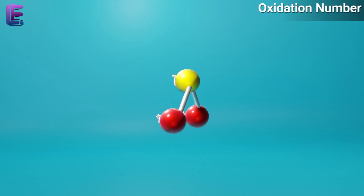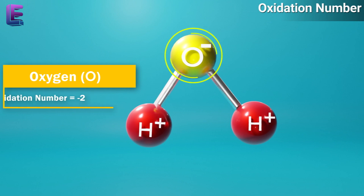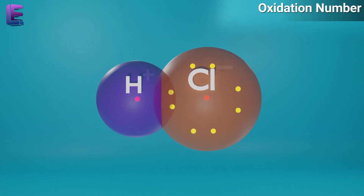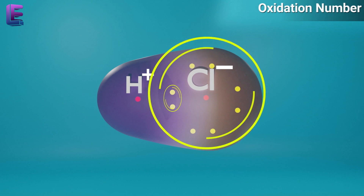Oxidation number denotes the oxidation state of an element in a compound, ascertained according to a set of rules formulated on the basis that an electron pair in a covalent bond belongs entirely to the more electronegative element.